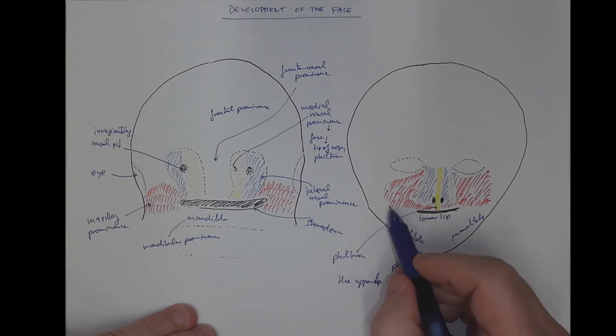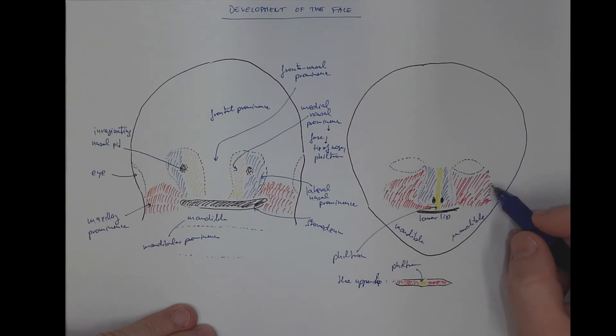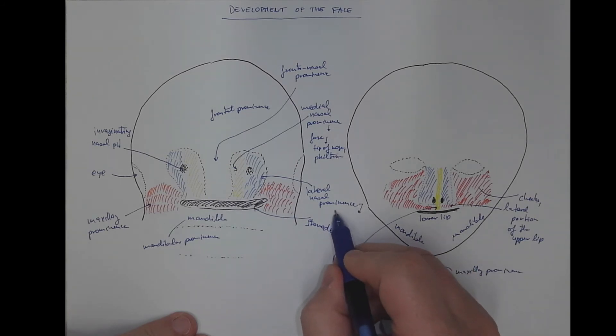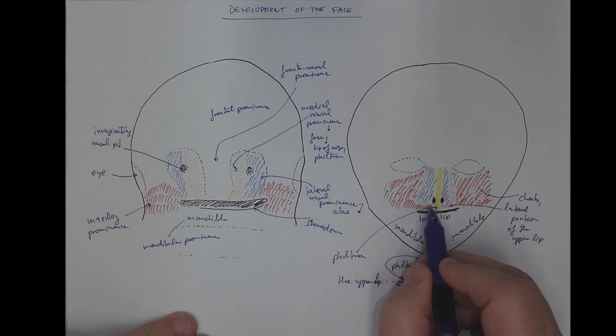The maxillary prominence will grow, forming the cheeks and lateral portion of the upper lip. This is from the maxillary prominence, both sides. And I should not forget the lateral nasal prominence that will form the alae, the side part, the wings of the nose.